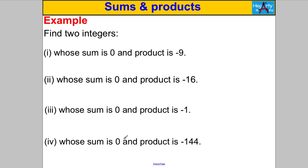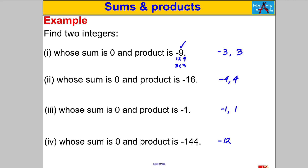Find two integers whose sum is 0 and product is negative 9. Factors of 9: 1×9 and 3×3. Can any combination sum to 0? Yes — if I choose negative 3 and positive 3. Negative 3 times 3 is negative 9, and negative 3 add positive 3 is 0. When the sum is 0 and the product is negative, the numbers are always the same magnitude but different signs. So for sum 0 and product negative 16: negative 4 and 4. For product negative 1: negative 1 and 1. For product negative 144: negative 12 and 12.